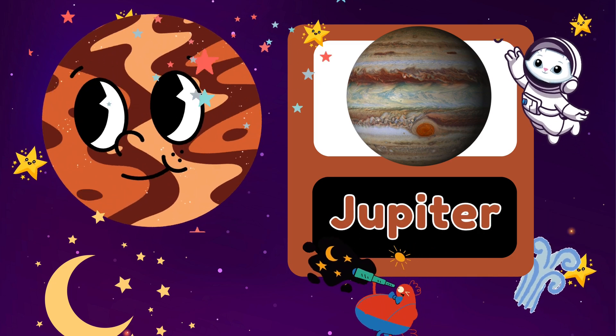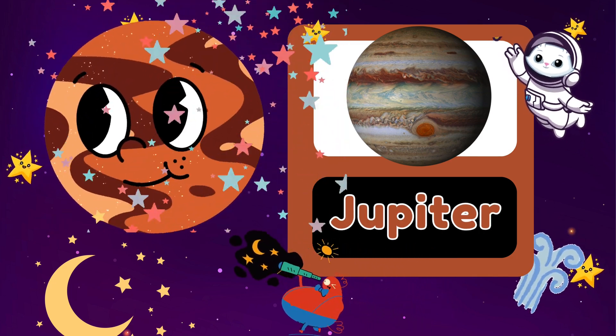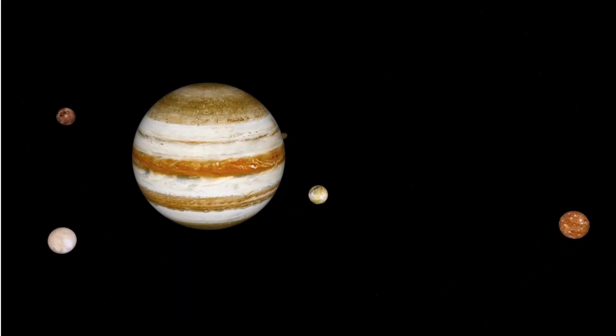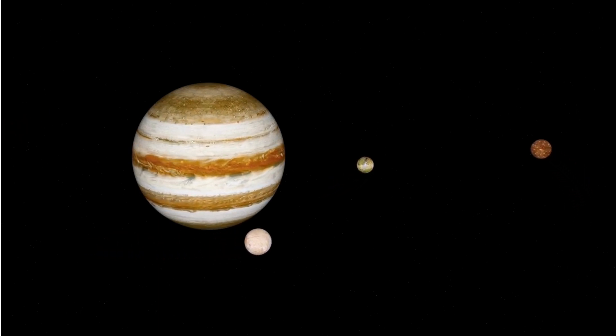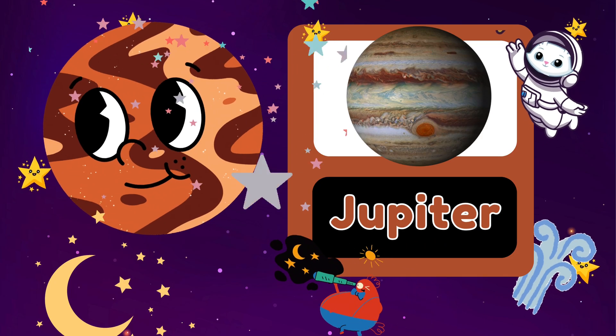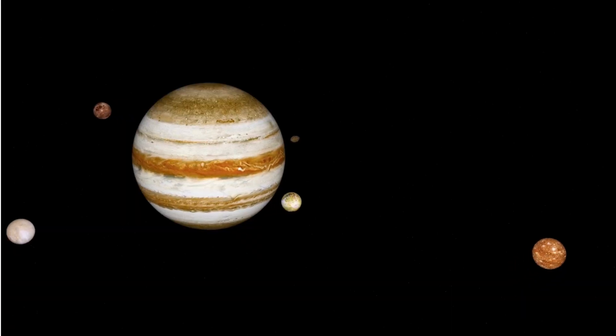Can you say Jupiter? Excellent! Here are three facts about Jupiter. Jupiter is the largest planet in our solar system. It has a giant storm called the Great Red Spot. Jupiter has over 75 moons.